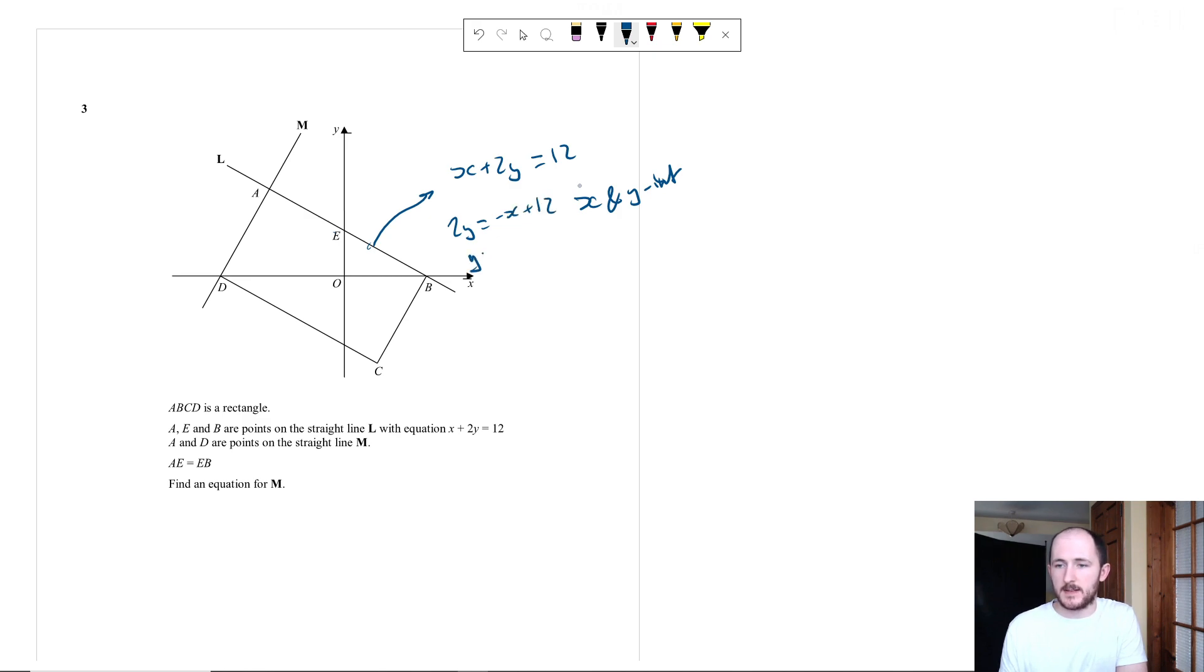So minus X plus 12, because we want it in the form Y equals MX plus C. So divide both sides by 2, and we get minus 1 half X plus 6. So for the Y intercept, the coordinates for E, it's the Y intercept. So what we're going to do is sub in X equals 0, because all along the Y axis, X is equal to 0. And that gives me Y is equal to minus 1 half times 0, so just 0, 6. So for E, the coordinates are 0 and 6.